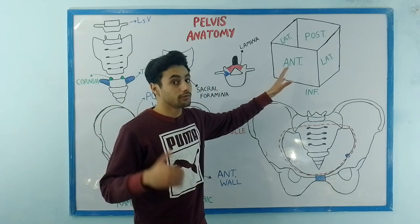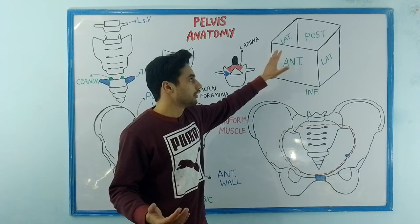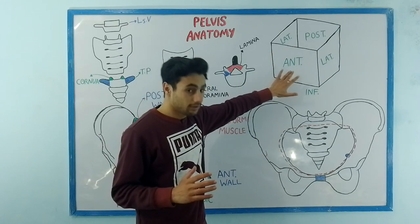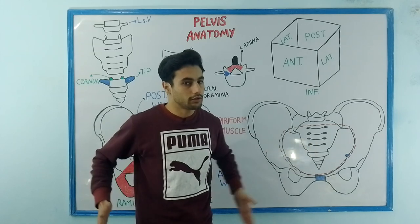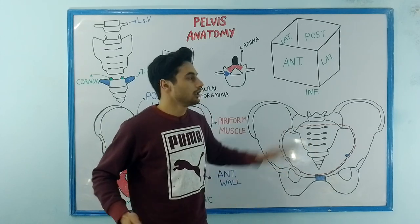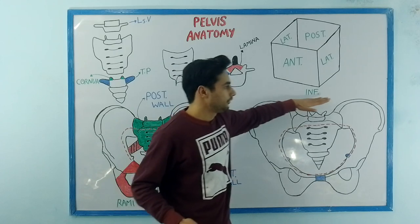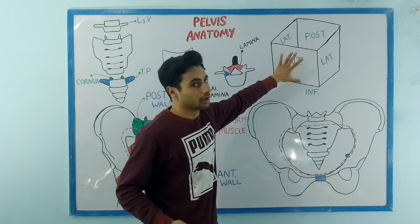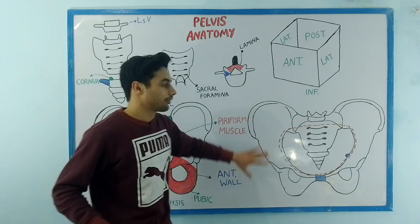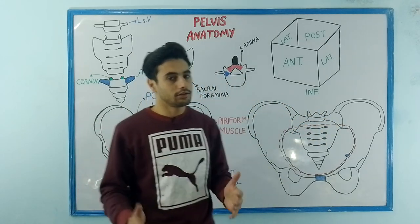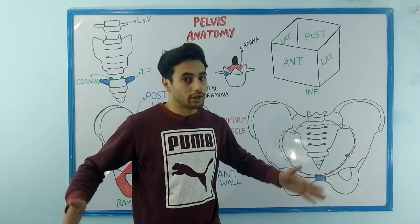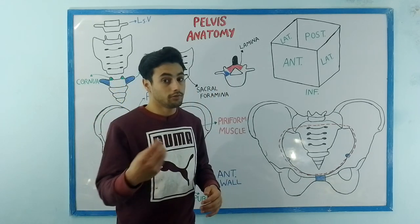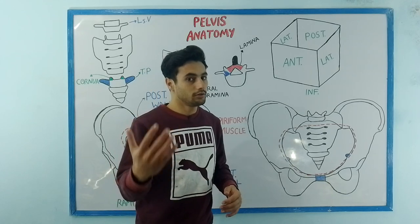Now this box is without a lid, so it doesn't have the superior wall. The box has the anterior wall, two lateral walls on both sides, the posterior wall, and the inferior wall. In the same way, this whole pelvic cavity will have the anterior wall, the two lateral walls, the posterior wall, and the inferior wall, which is known as the pelvic floor.